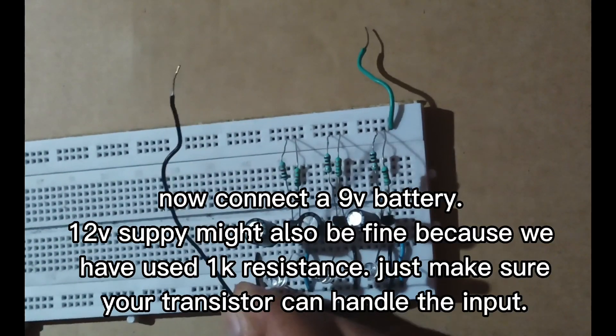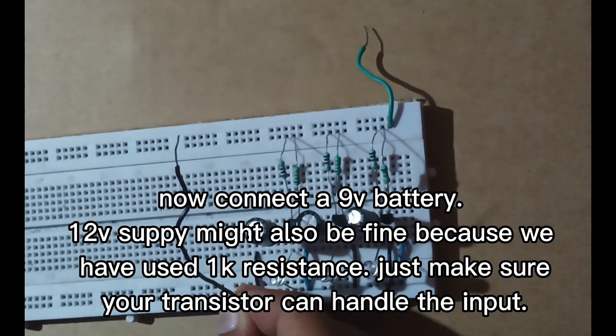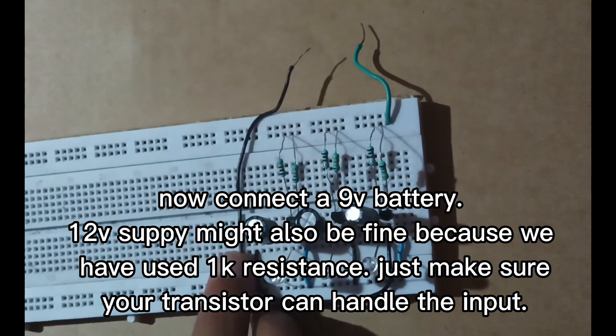Now connect a 9V battery. 12V supply might also be fine because we have used 1,000 ohm resistance. Just make sure your transistor can handle the input.